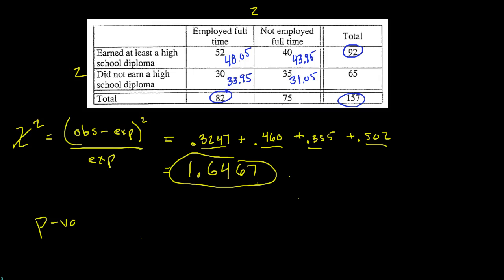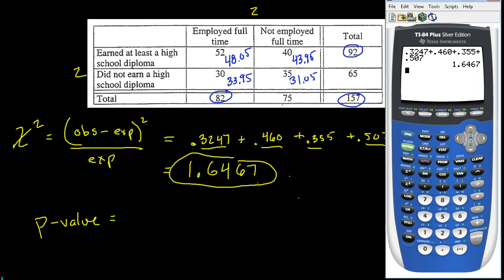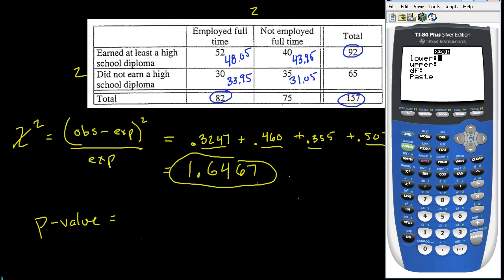Now we need our p-value. Chi-squared is a test statistic, just like a z-score or t-score. To get our p-value, we use chi-squared CDF. We've used normal CDF for z-scores and t-CDF for t-scores; now we use chi-squared CDF. Chi-squared is always positive, so we start at our value of 1.6467 and go up to 9999.